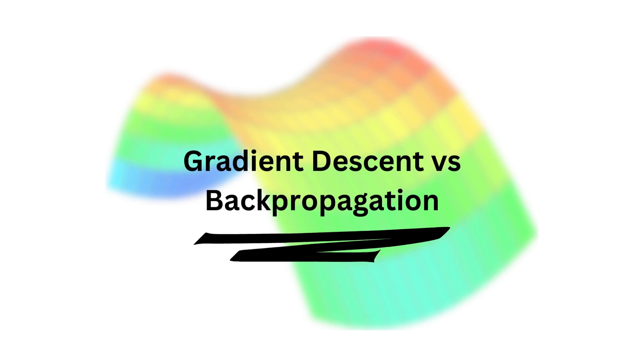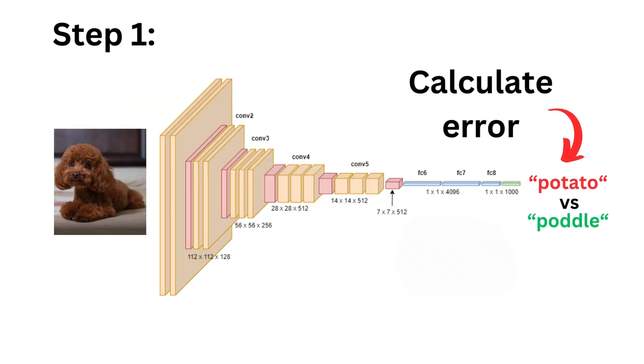The answer is backpropagation. We will check the high-level overview of how the algorithm works. You'll see it's pretty simple. There's four steps.